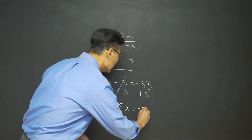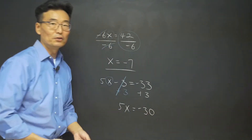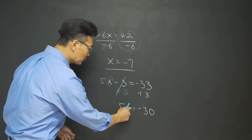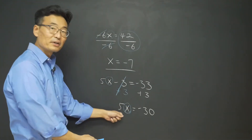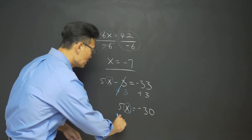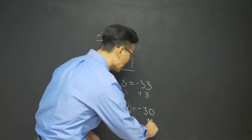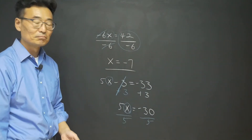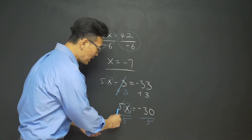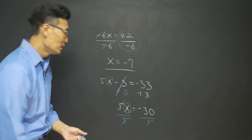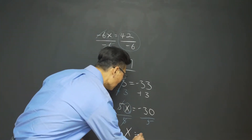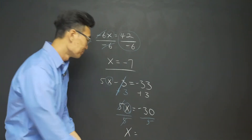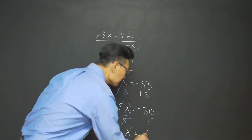Adding 3 to both sides leaves 5x on the left, and negative 33 plus 3 gives us negative 30. Now we divide both sides by 5 to solve for x. The 5 on the left side cancels out, and simplifying negative 30 over 5 gives us negative 6 as our final answer.